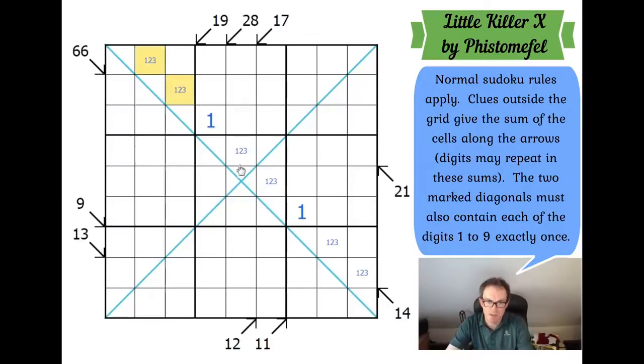Whatever pairs we make up in these 3 boxes, I can't repeat a pair because if I did, if I had a 1 and 3 here and a 1 and 3 here, because I need 2 2s along this string, I'd end up with 2 2s here, and that doesn't work.